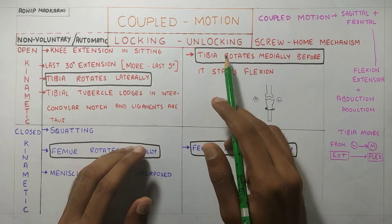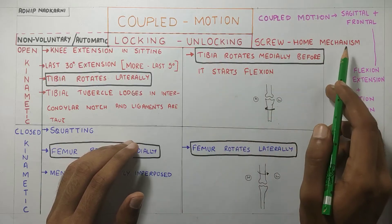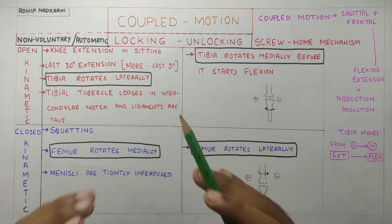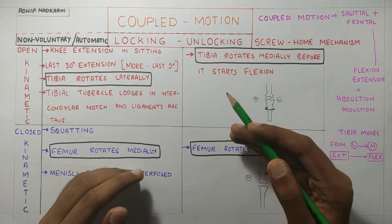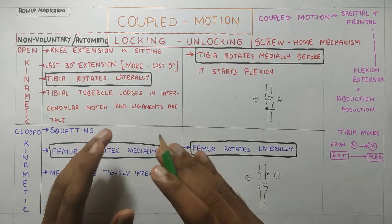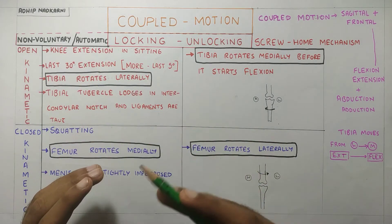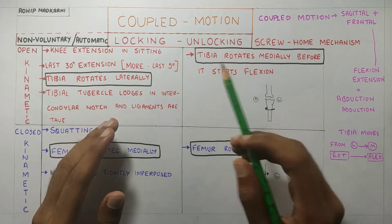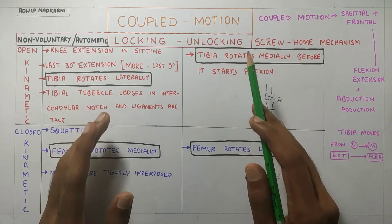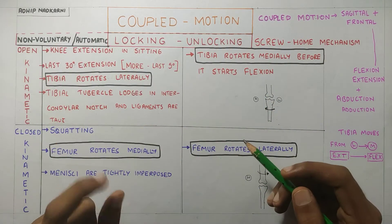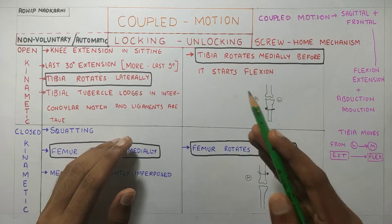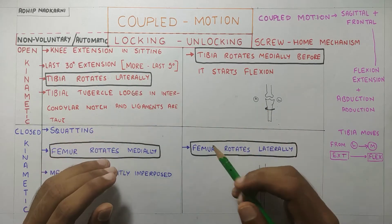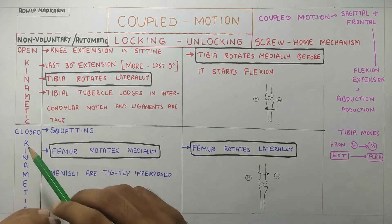Going to locking and unlocking of the knee joint — it is also called the screw home mechanism and it is an involuntary or automatic movement that occurs at the knee joint. Although there is some research contradictory to this, stating that the popliteus muscle is involved in unlocking of the knee joint. To understand locking and unlocking, we should first understand open and closed kinematic chain.